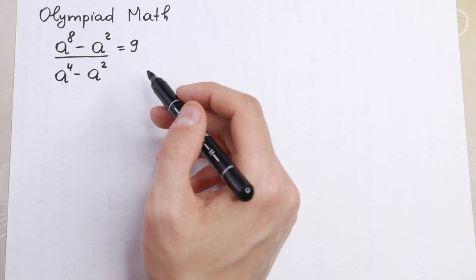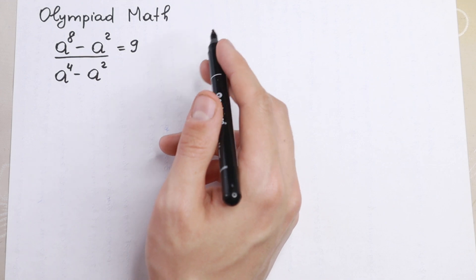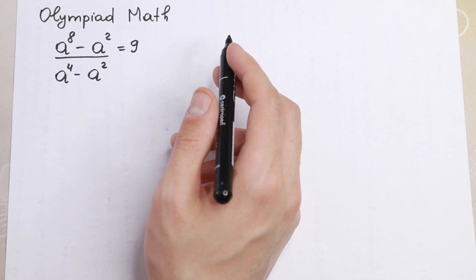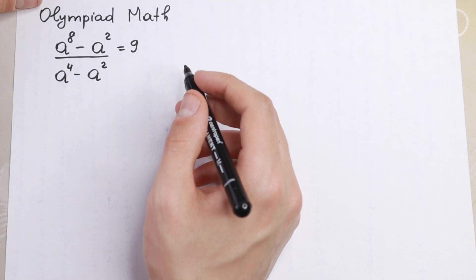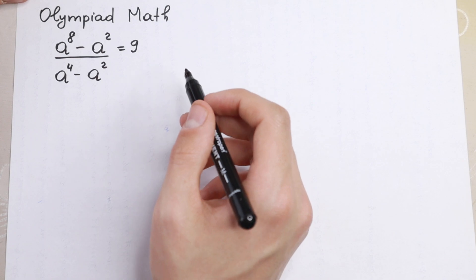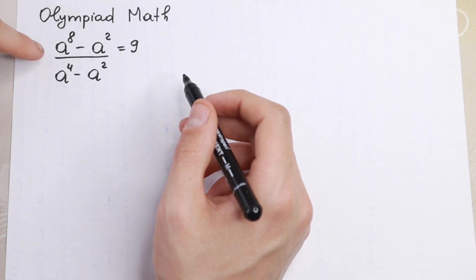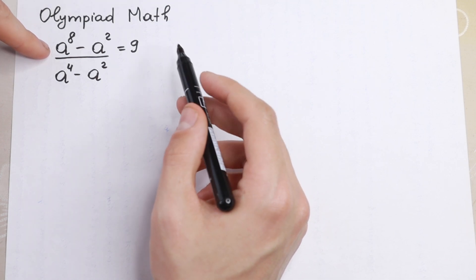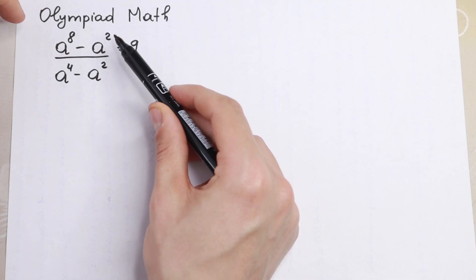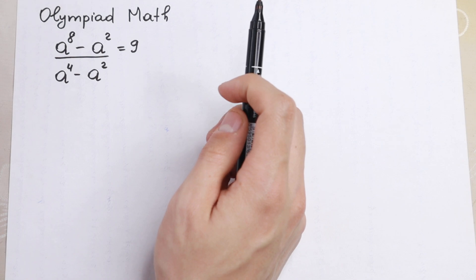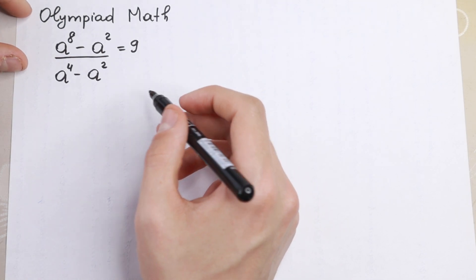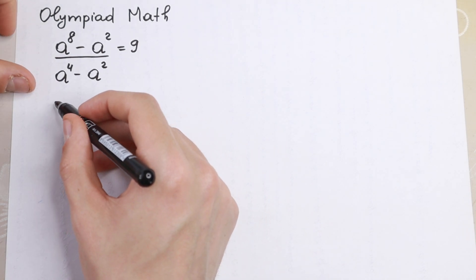Because we have a huge power, there are a lot of approaches. But I want to show you a really good approach. Take a look right here — in our numerator we have a to the eighth power and a squared, so it's not hard to see that a squared can be factored out as a common factor. So let's do this.